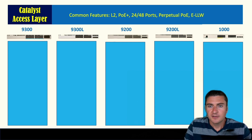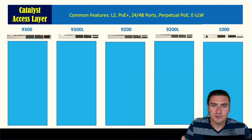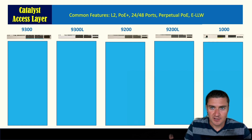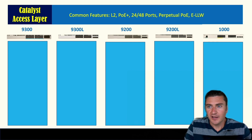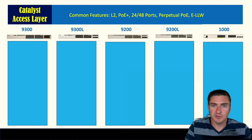Perpetual PoE is a really cool feature Cisco came out with. What it allows is: if the switch needs to reboot for whatever reason, PoE power is still provided on those ports. Things like phones and access points don't need to reboot when the switch does — they stay up while the switch goes through its reboot phase.